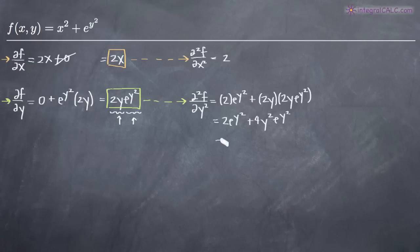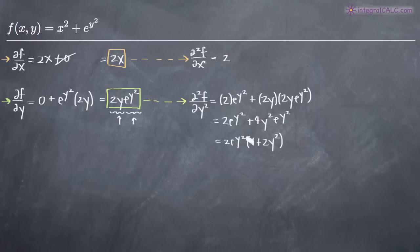If we wanted to, we could factor out 2e to the y squared and get 2e to the y squared times the quantity 1 plus 2y squared. But we don't have to — both forms are correct, whether factored or not. So we now have our second order partial derivatives with respect to x and with respect to y.